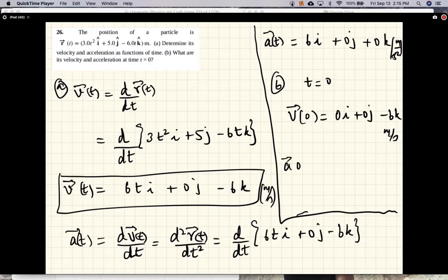Acceleration at 0 seconds is there. The acceleration doesn't depend on time, so at all times acceleration is that: 6i plus 0j plus 0k meters per second squared.